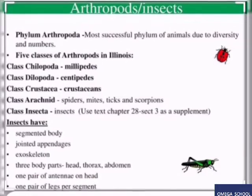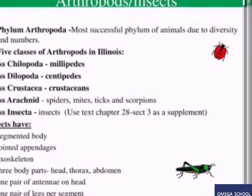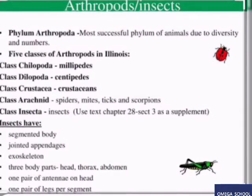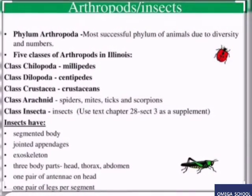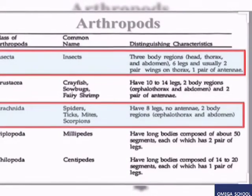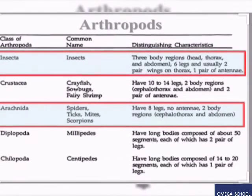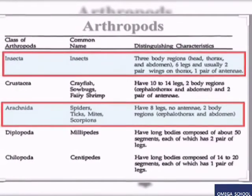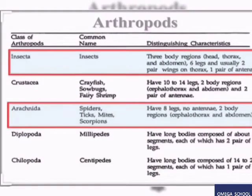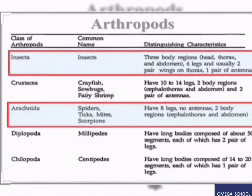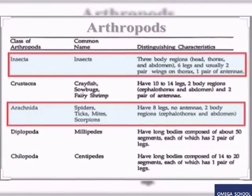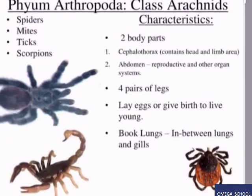The five classes of Arthropoda are: class Chilopoda, class Diplopoda, class Crustacea, class Arachnida, and class Insecta. Insects live almost everywhere and have three body parts: head, thorax, and abdomen. They have three pairs of jointed legs, one pair of antennae, and compound eyes. You can compare and contrast all five classes in the form of a table shown here.